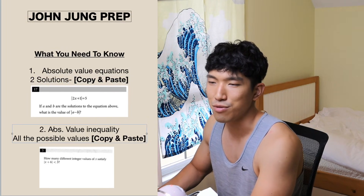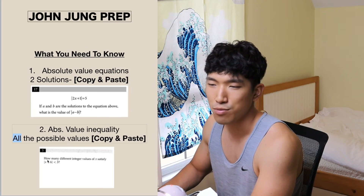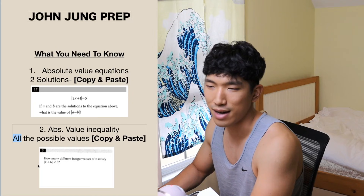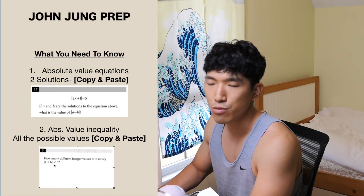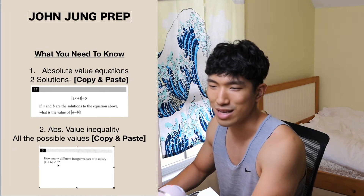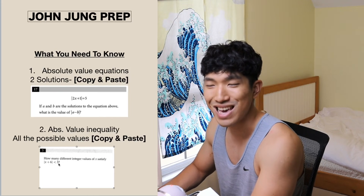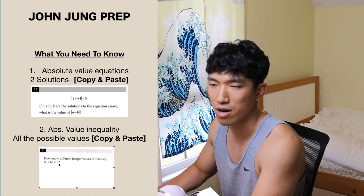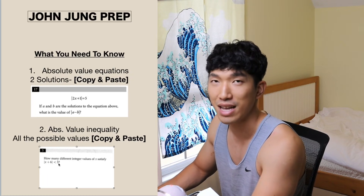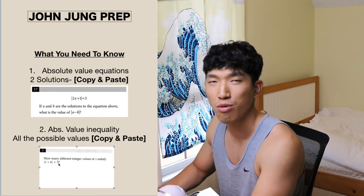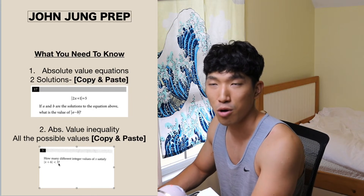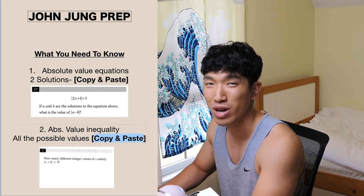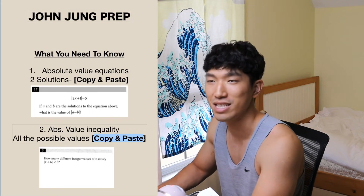The second type is going to be an absolute value inequality. For example: how many different integer values of X satisfy this inequality? This one is a little more complicated because there are so many possibilities — as long as the expression is less than three, it can work. Most people again plug and chug different numbers and hope it all works out and they didn't miss any. That's a super risky move, and we're going to go over how to use copy and paste to find out exactly how many there are as quickly and accurately as possible.